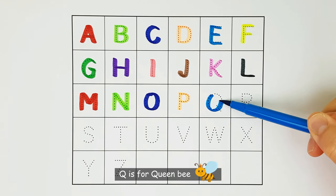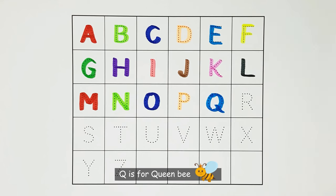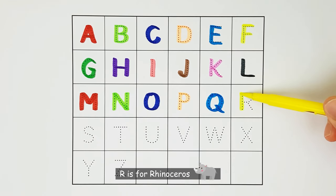Q. Q is for queen bee. Q. R. R is for rhinoceros. R.